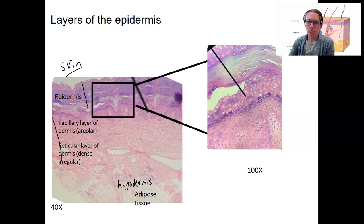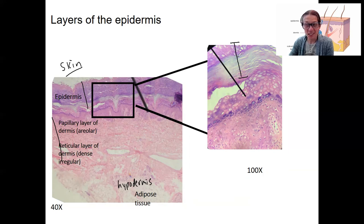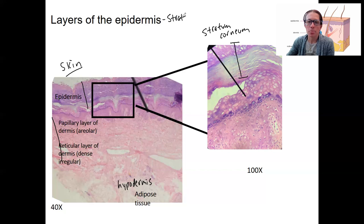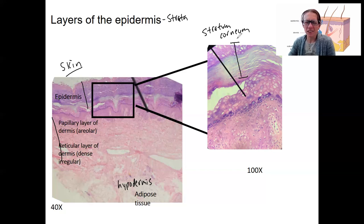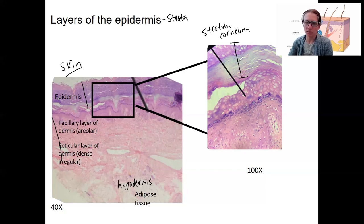Let's name these layers. The top layer up here is your stratum corneum. These are all going to be strata — plural of stratum — like stratification, layers. Corneum: I think of it as like 'crown,' but it actually means 'horny layer,' horny as in thorns. It's dead cells that are kind of rough-looking, almost like you have a thick horn material on you.